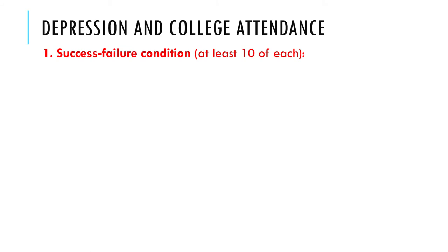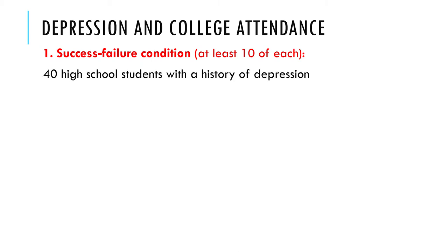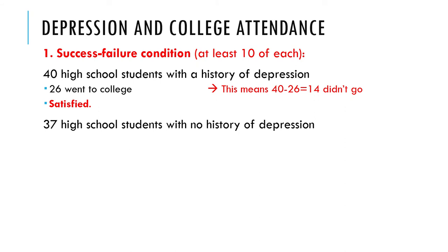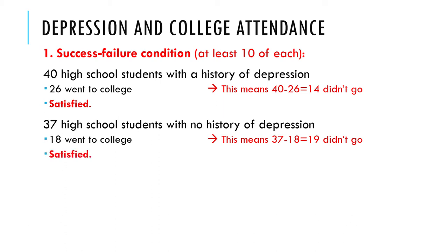Let's check the success-failure condition, which means you need at least 10 of each outcome of your binary data in each sample. In the group of 40 with a history of depression: 26 went to college — greater than 10; 14 did not — also greater than 10. Satisfied. For the 37 with no history of depression: 18 went to college — greater than 10; 19 didn't — also greater than 10. Satisfied.